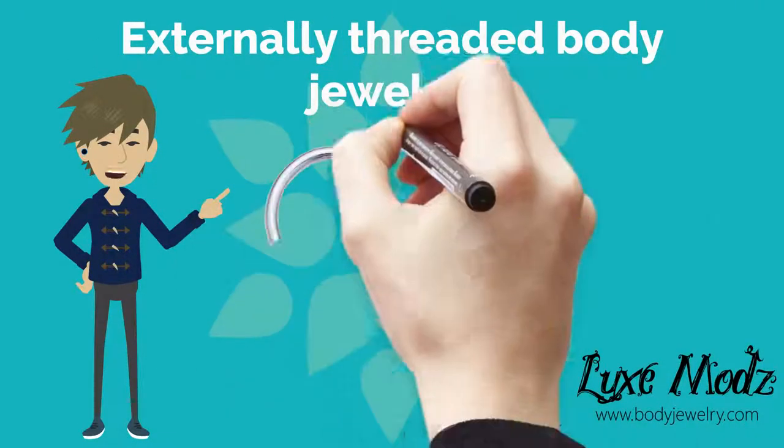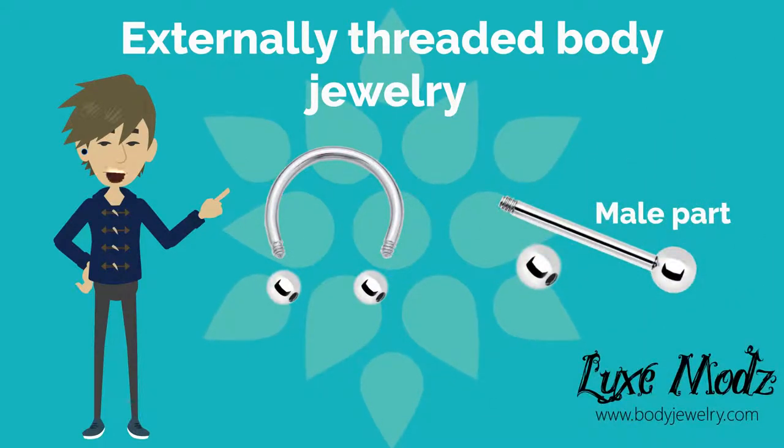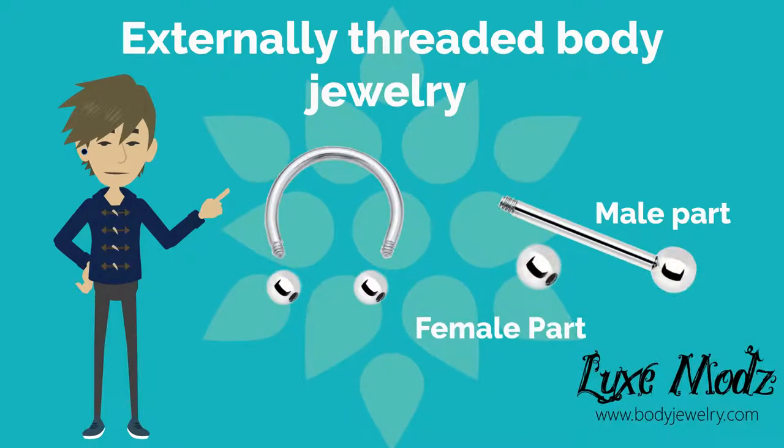In externally threaded body jewelry, the threading or male part is located on the shaft of the jewelry that fits into the piercing, while the ball end holds the female part which the shaft screws into.